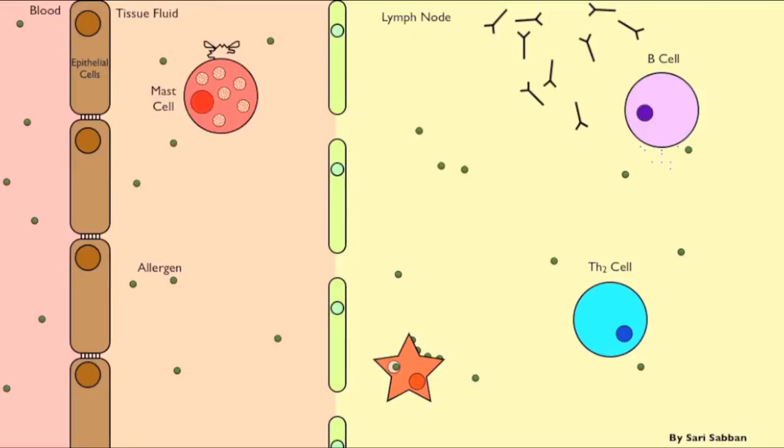Once the IgE antibody is produced, it circulates around the body through the blood and binds onto its high affinity receptor, which is found on mast cells in tissue. The binding is very strong, which is one of the reasons why allergy is persistent and lifelong.